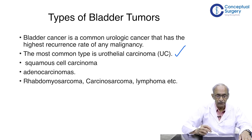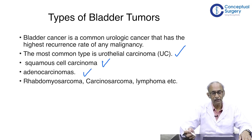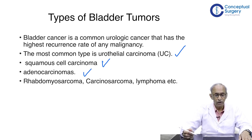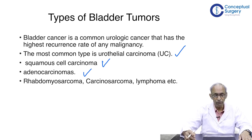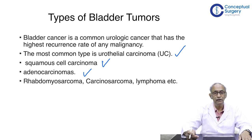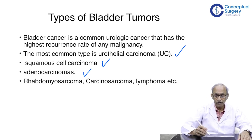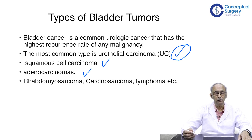The next type is squamous cell carcinoma, and a third is adenocarcinoma — for example, the one arising from the urachus is a typical case of adenocarcinoma. There are also rhabdomyosarcomas, carcinosarcomas, and lymphomas. Squamous cell carcinoma typically arises out of chronic irritation, for example a stone in the bladder.